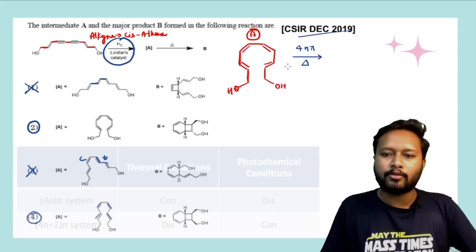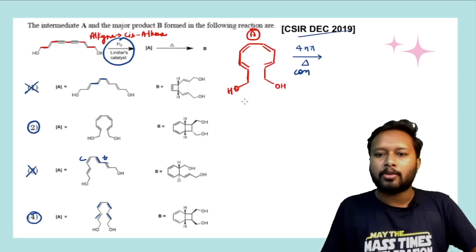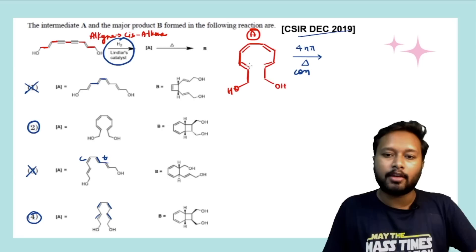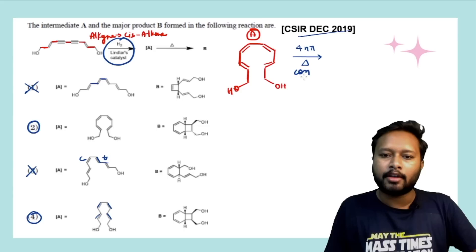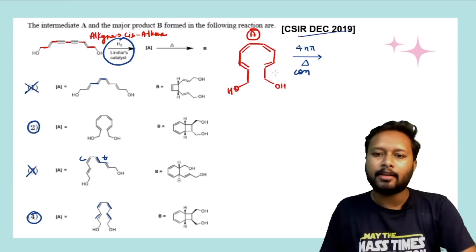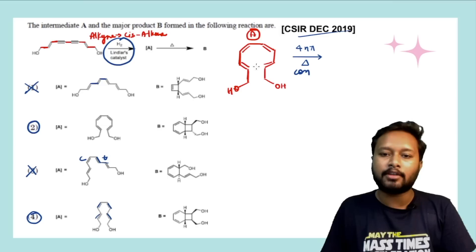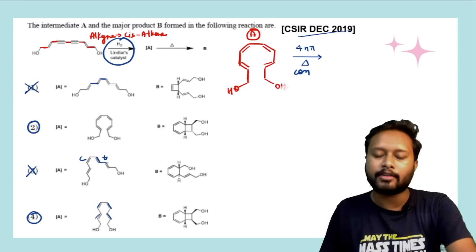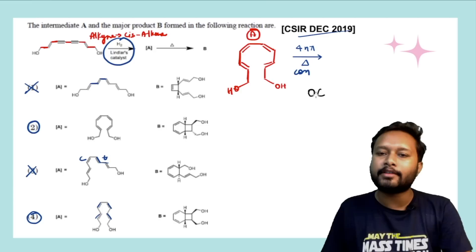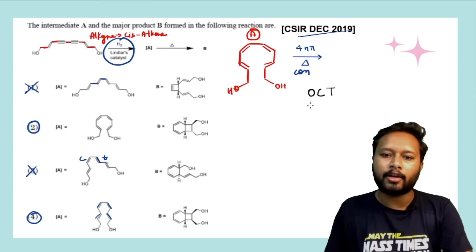The system undergoes conrotation. There is a shortcut trick: first, see in which direction the two OH groups are. With respect to each other they are opposite in direction — this is trans to this double bond and this is trans to this double bond. So they are going in opposite directions. If the direction is opposite and you are doing conrotation, it is going to give you a trans product. The stereo of the two groups in the product is going to be trans.